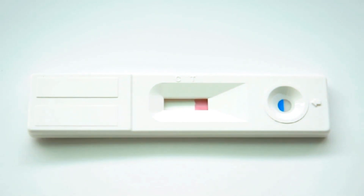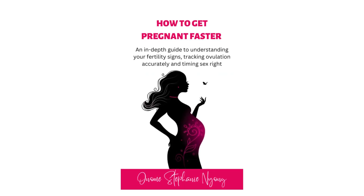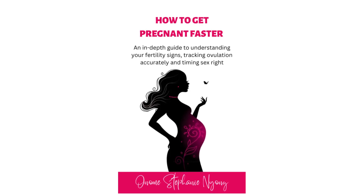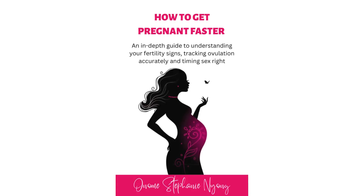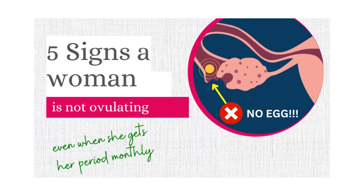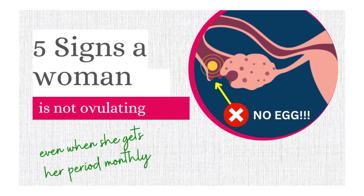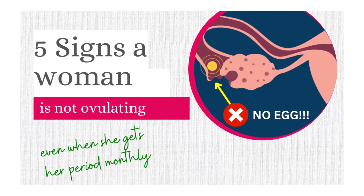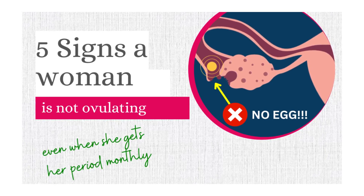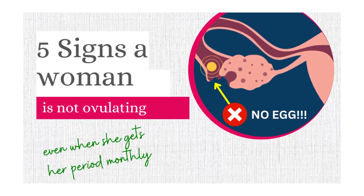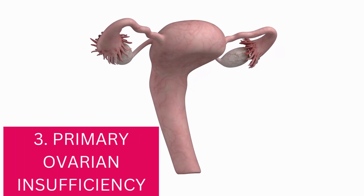This is absolutely normal and happens to a lot of us. If you're trying to conceive and you're not sure if you actually ovulate, you can get my ebook 'How to Get Pregnant Faster' — it will help you understand your fertility signs and how to use them to track ovulation. I also have a previous video about signs that could mean a woman is not ovulating. I'll put all the links below this video.